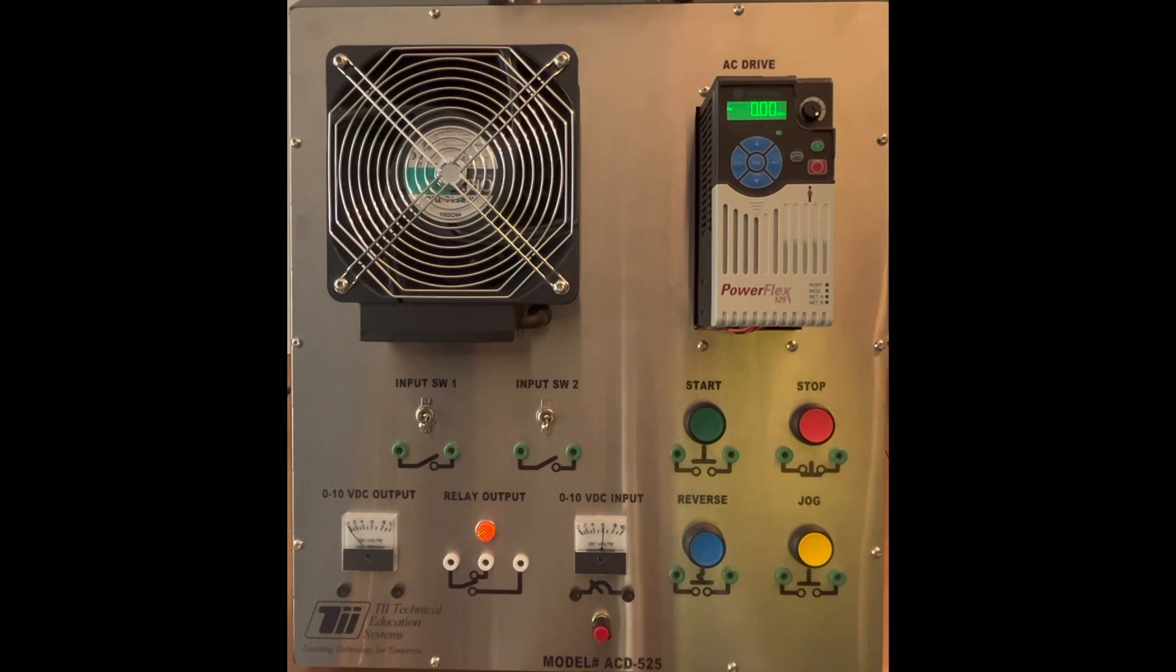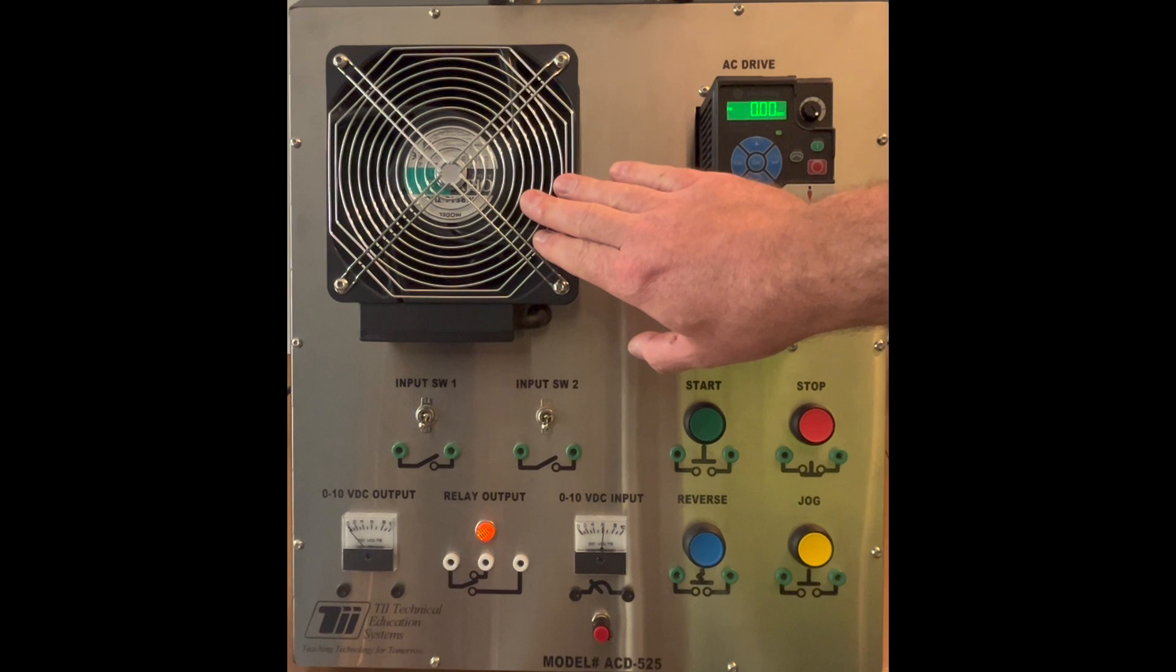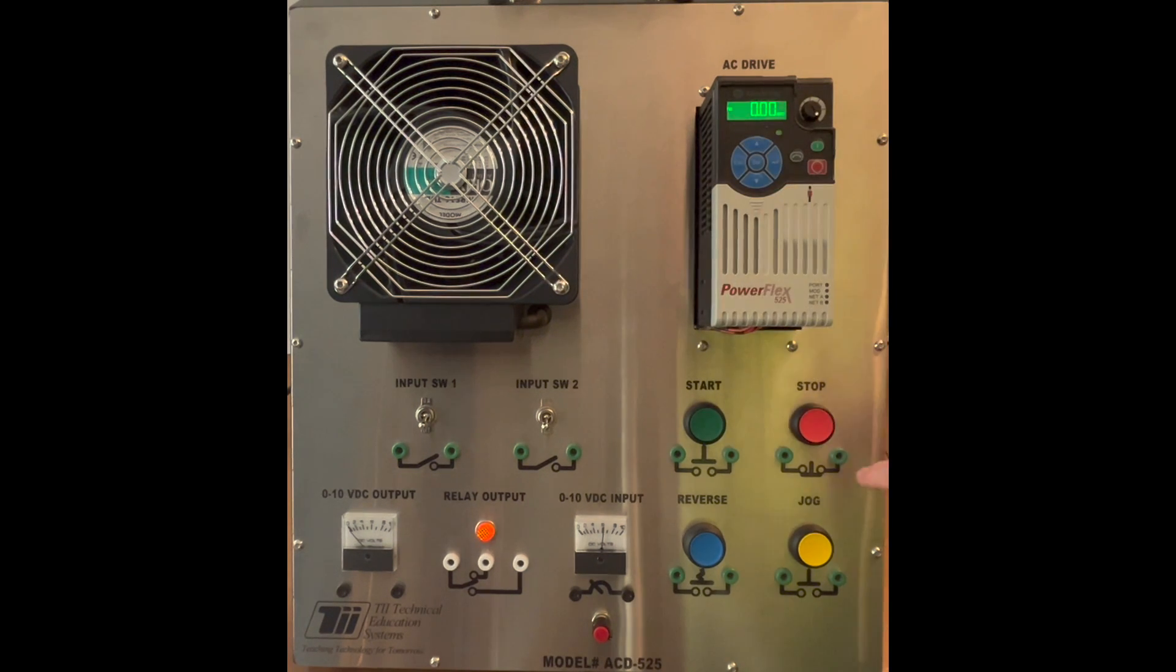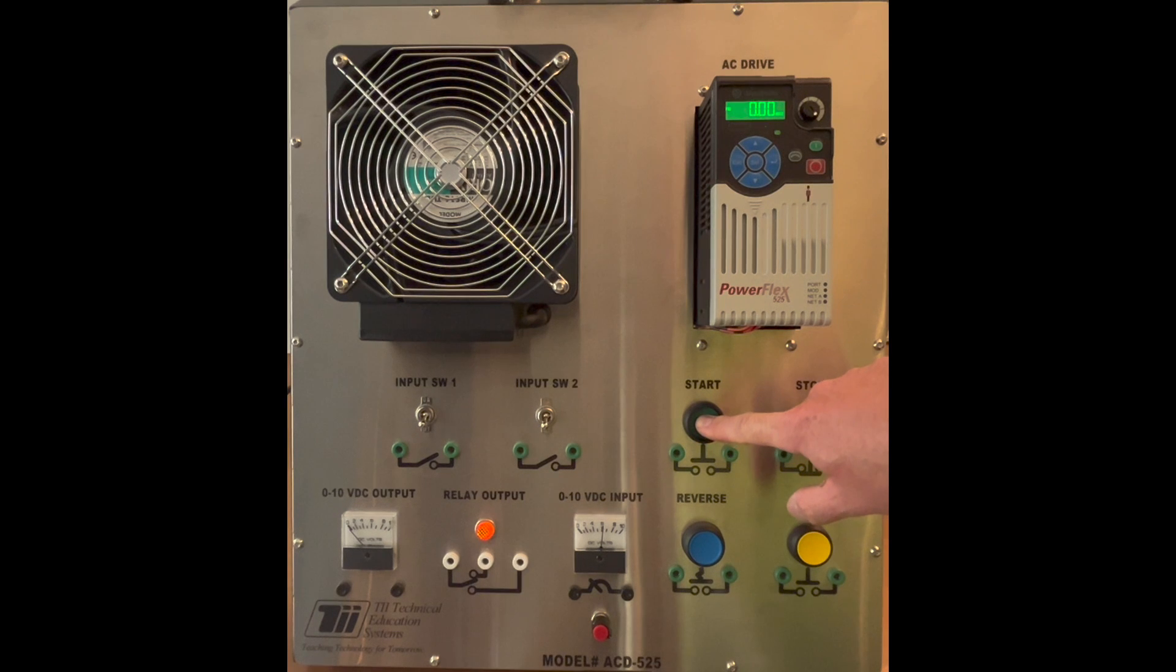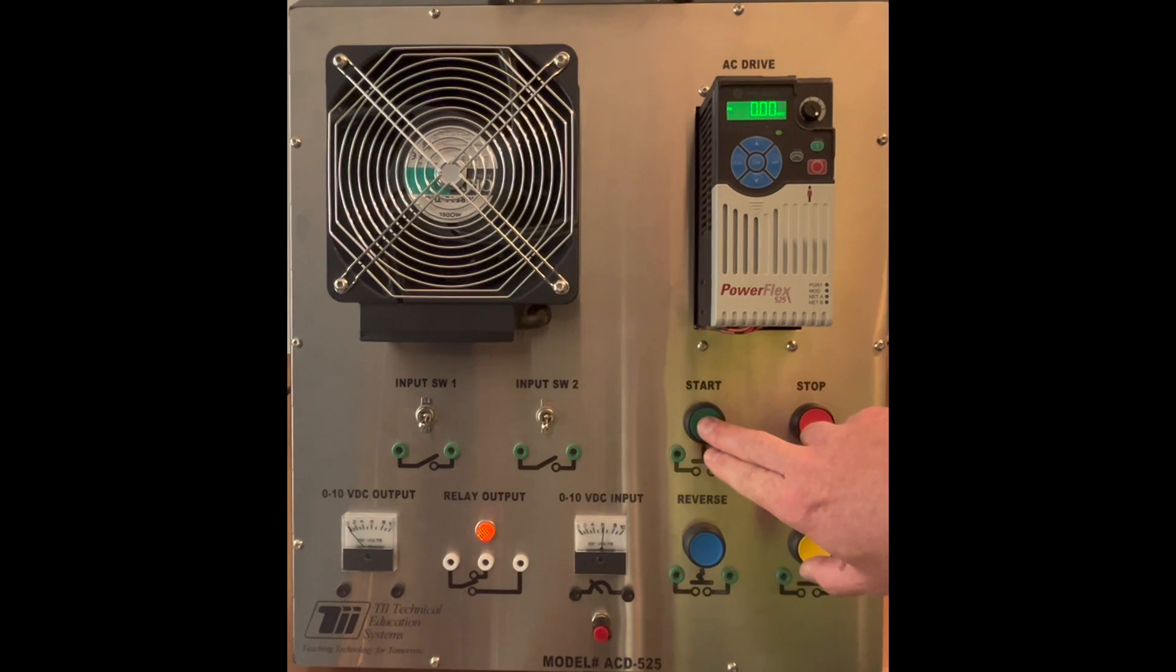What three-wire control is, is we want to be able to use the start button to start the VFD running at whatever frequency it is set at, and then let the button go. If I activate the stop button, I want it to stop. Two-wire control is when I just have my start button activated, and then I have to hold it to let the motor run. But in this case, we want to be able to activate it, walk away, then hit the stop button to turn it off.